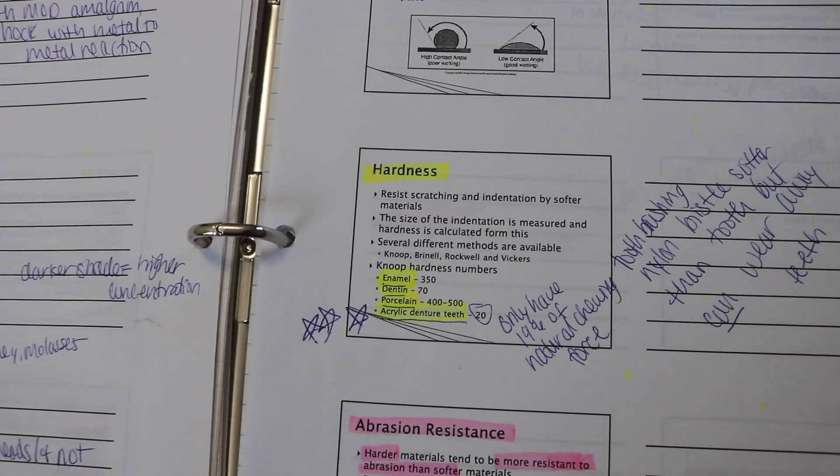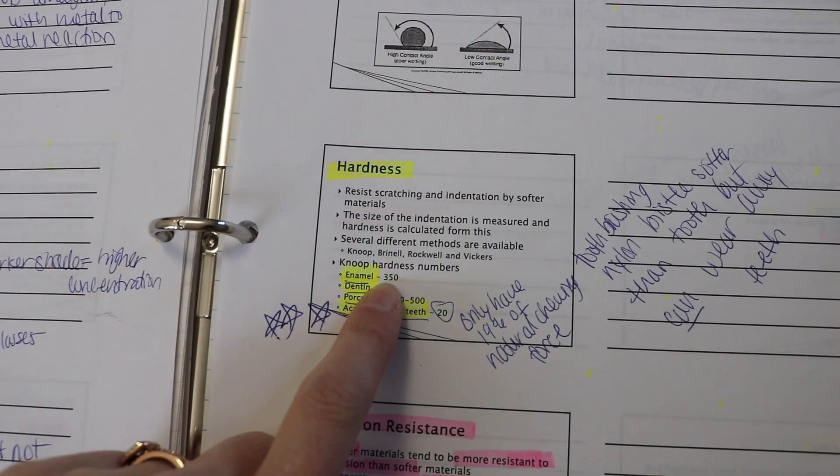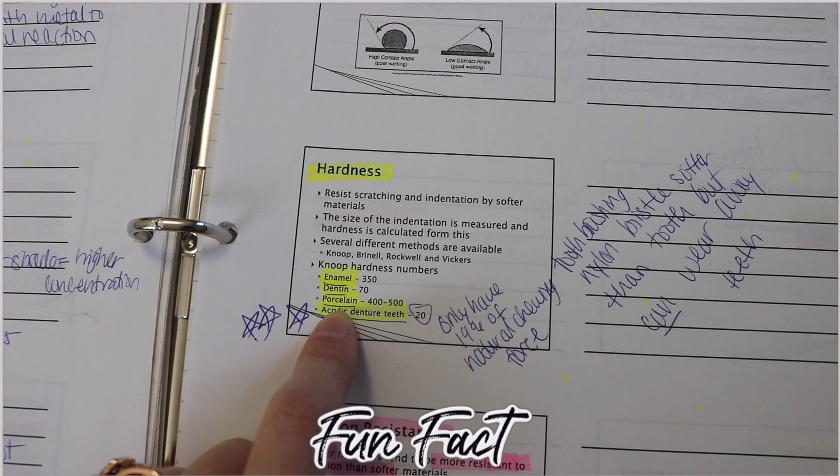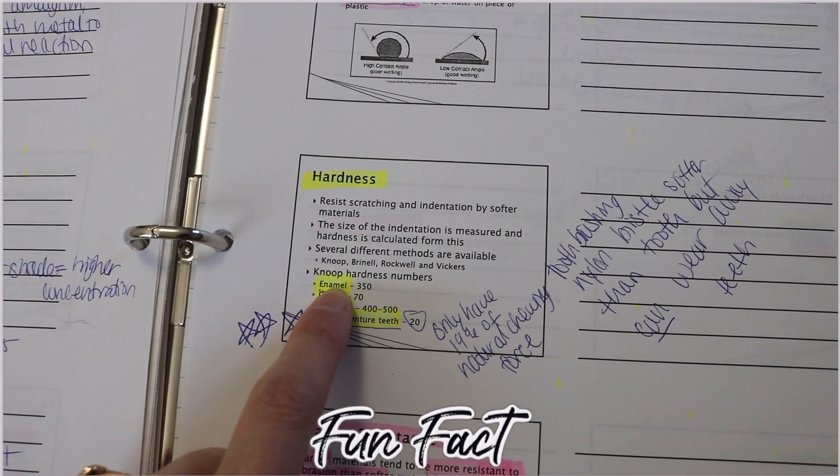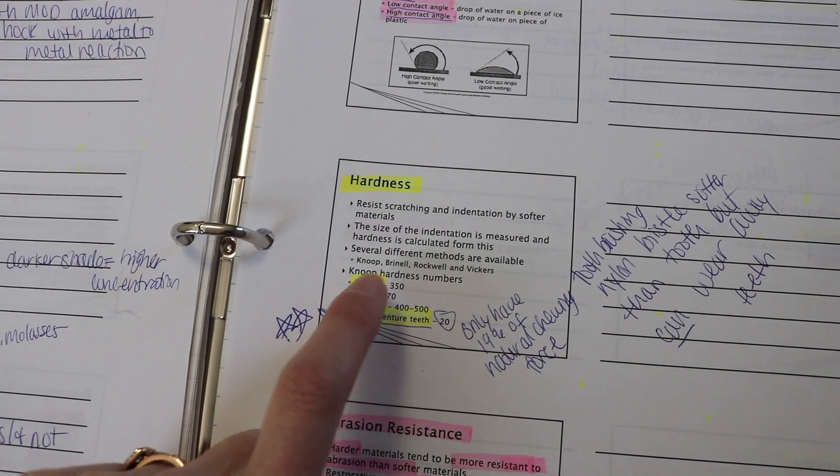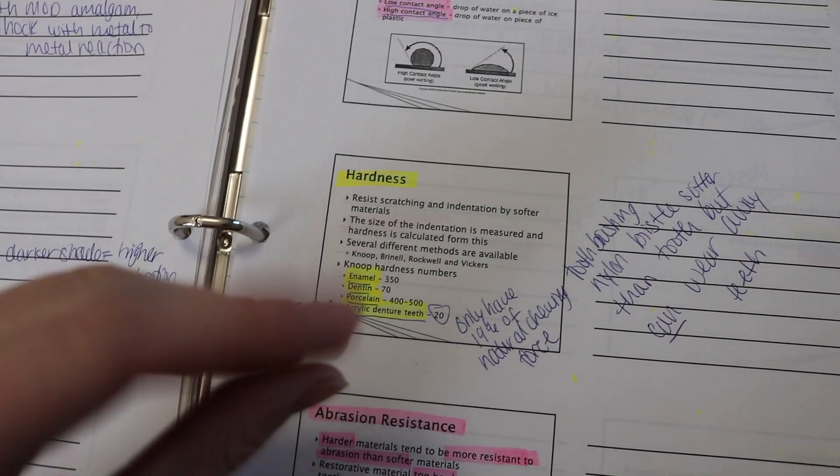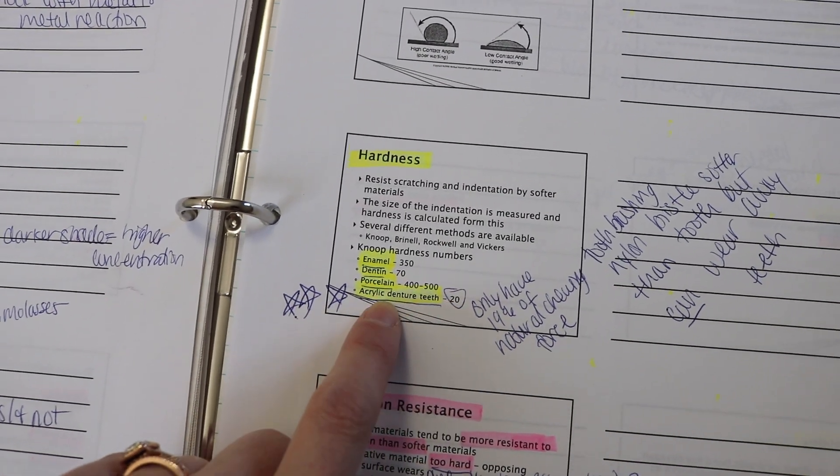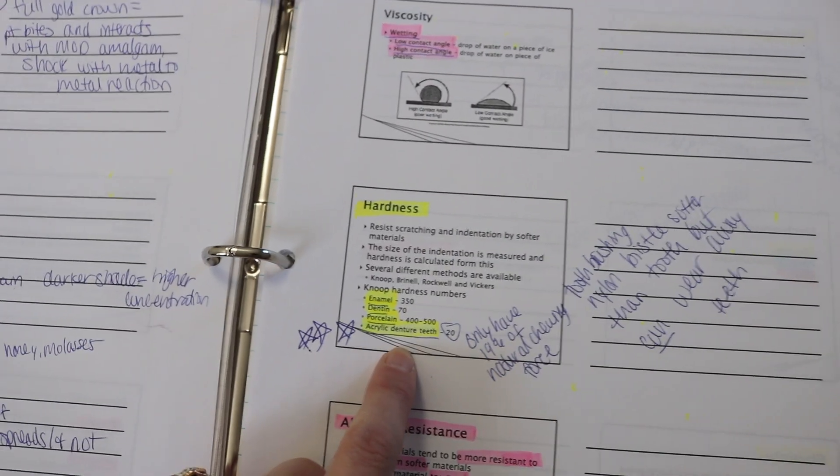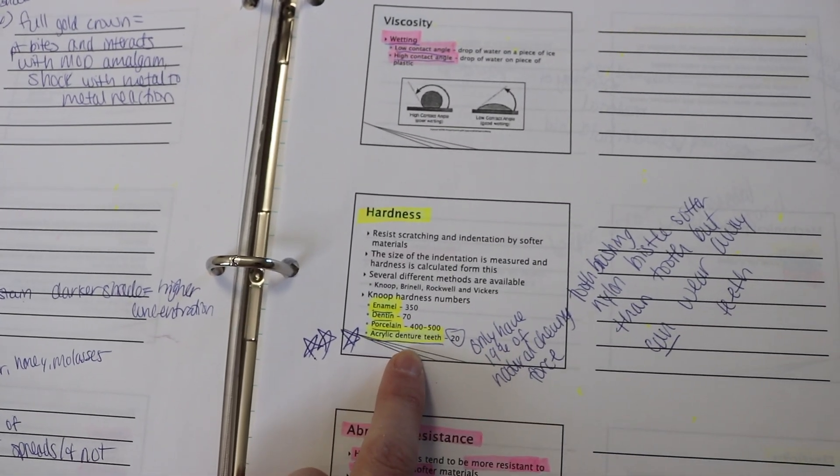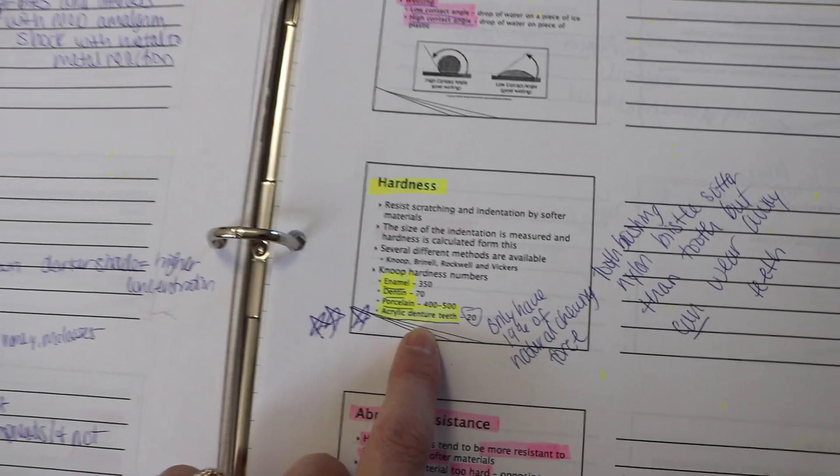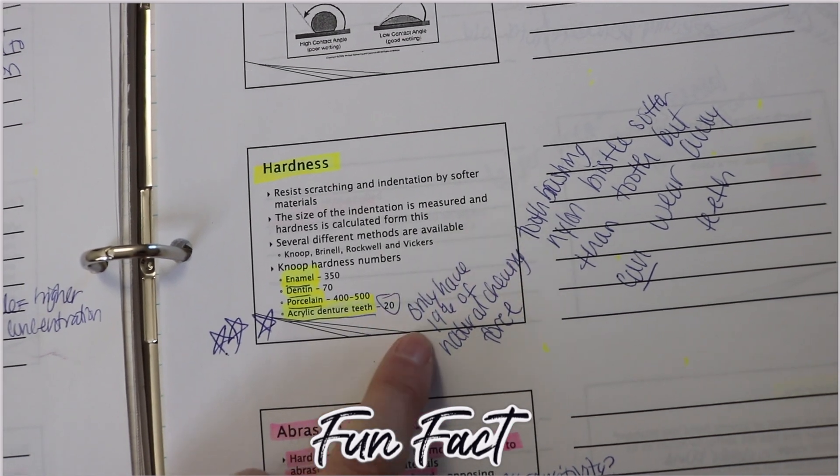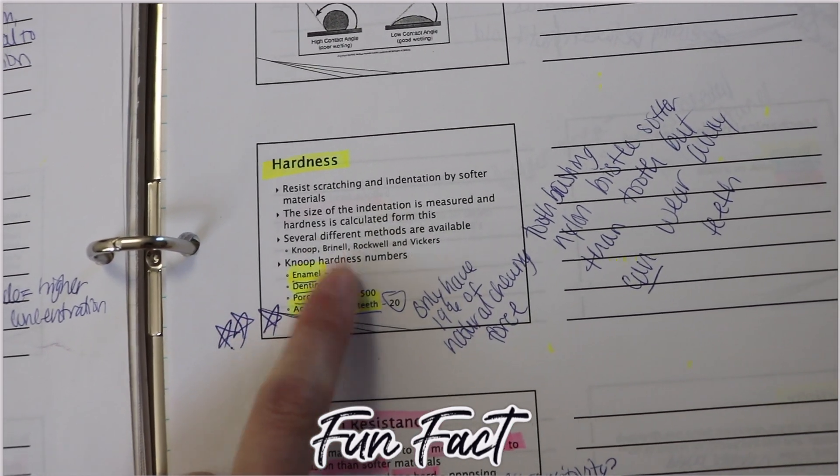So here's some really cool information about the hardness. Enamel, the outer white shell of your tooth, you can see that hardness is at 350 but when you look at porcelain it's at 400 to 500. So porcelain is actually stronger than your enamel which is why sometimes it is a concern because if this is harder than that and they're occluding together, hitting together whenever you're biting, this can do more damage to your enamel. Now when you look at the acrylic denture teeth, the fake teeth that they put on dentures, I hear people talk all the time about oh it'd be so much easier to just have dentures then I wouldn't have to worry about it'd be so much cheaper. Look at how different this is. Denture teeth only have about 19% of the natural chewing force that your natural enamel does.